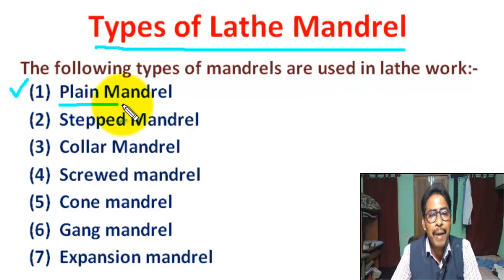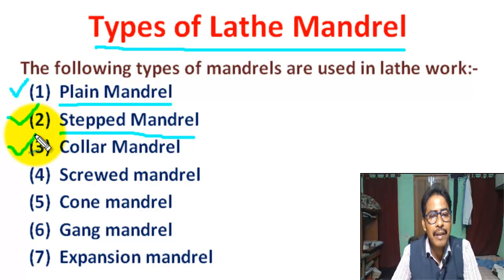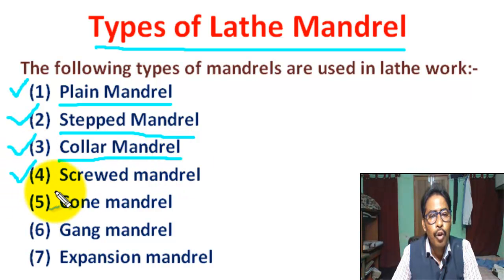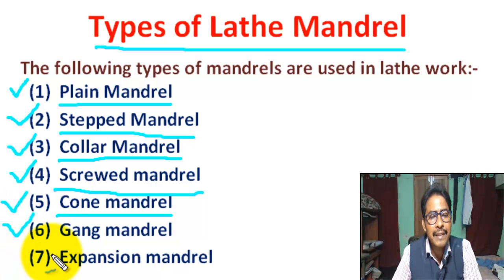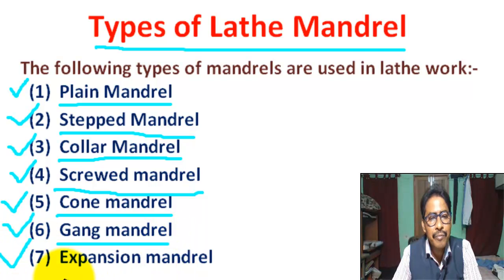Following are the different types of mandrels: Number 1, plain mandrel. Number 2, step mandrel. Number 3, collar mandrel. Number 4, square mandrel. Number 5, cone mandrel. Number 6, gang mandrel. Number 7, expansion mandrel.